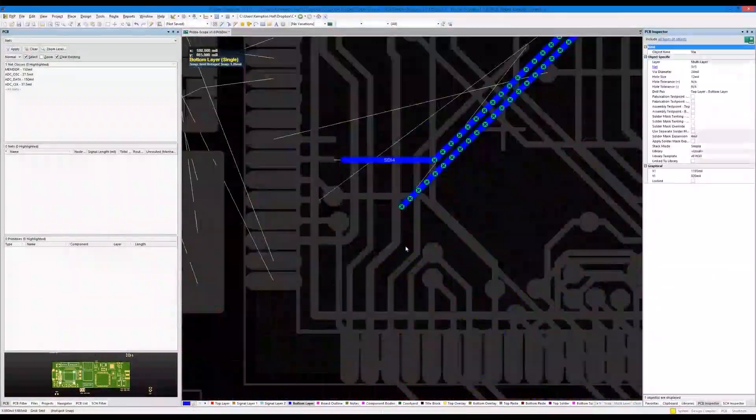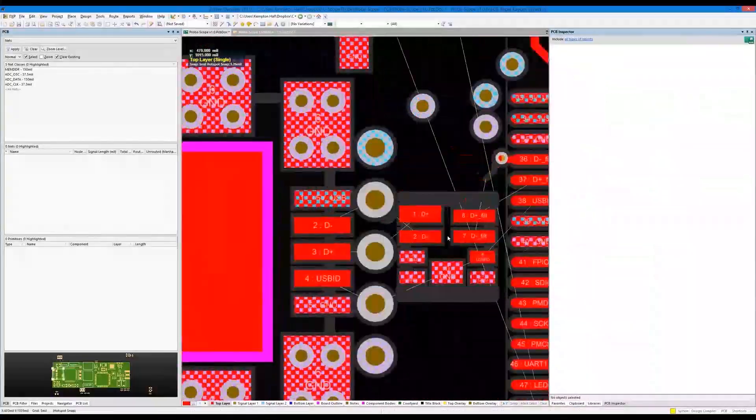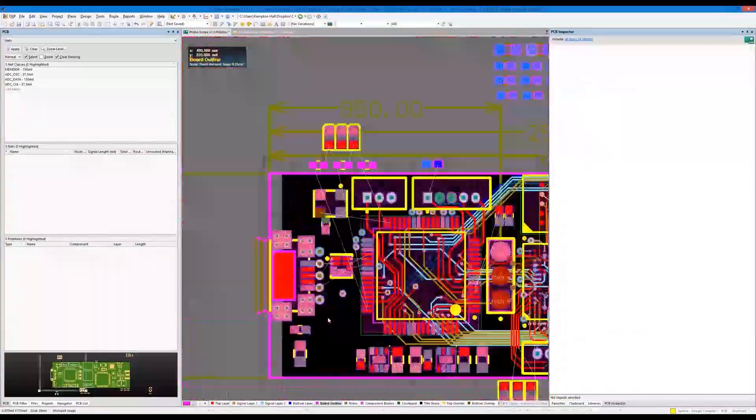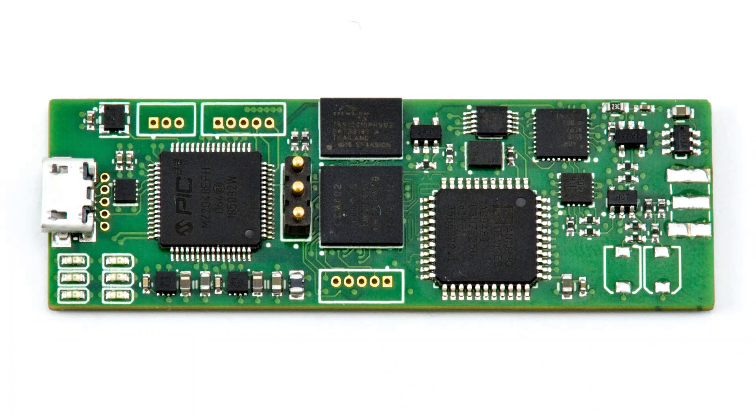For our final board, we took advantage of high-density interconnect techniques. To get the size down as far as possible, we created a six-layer board that uses a V-in pad process. This allowed us to put all the control electronics right along the cable.